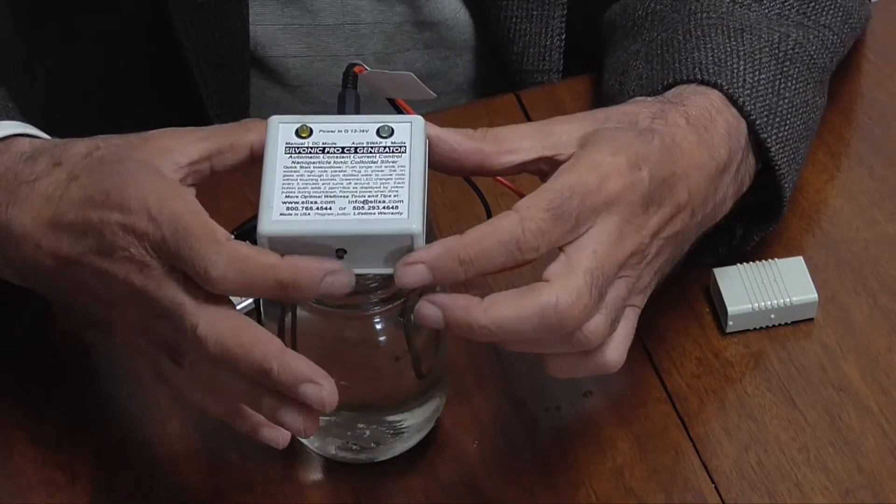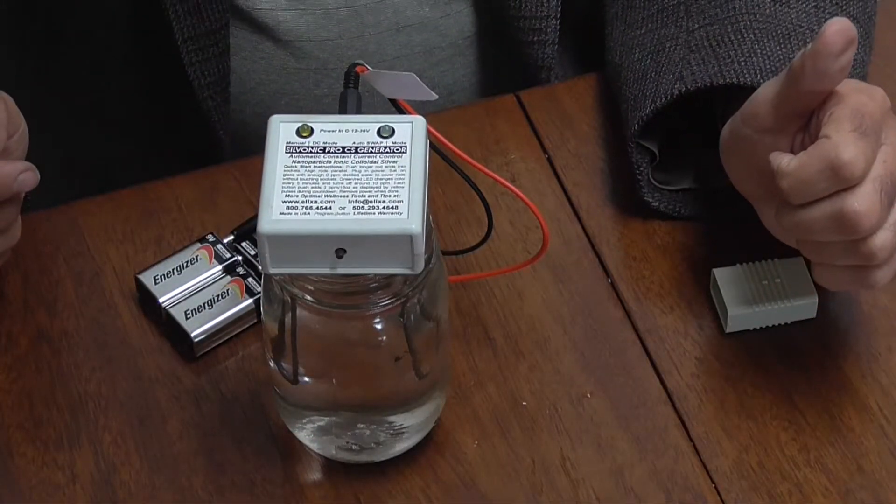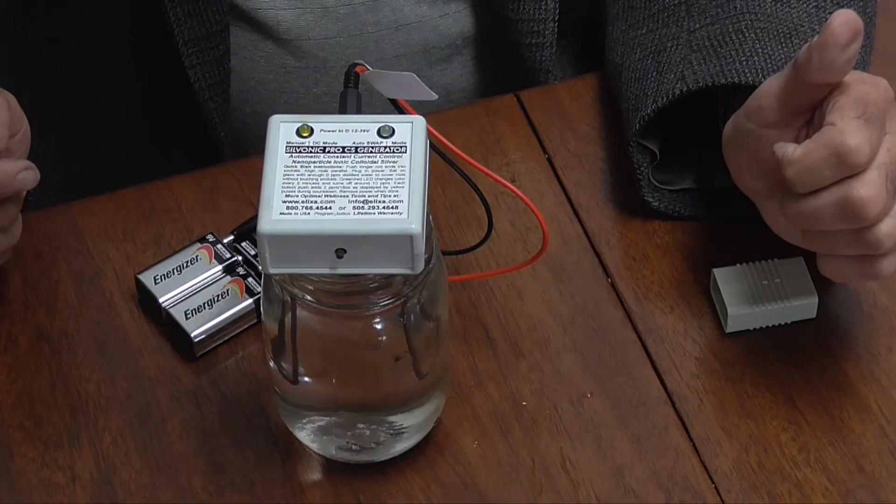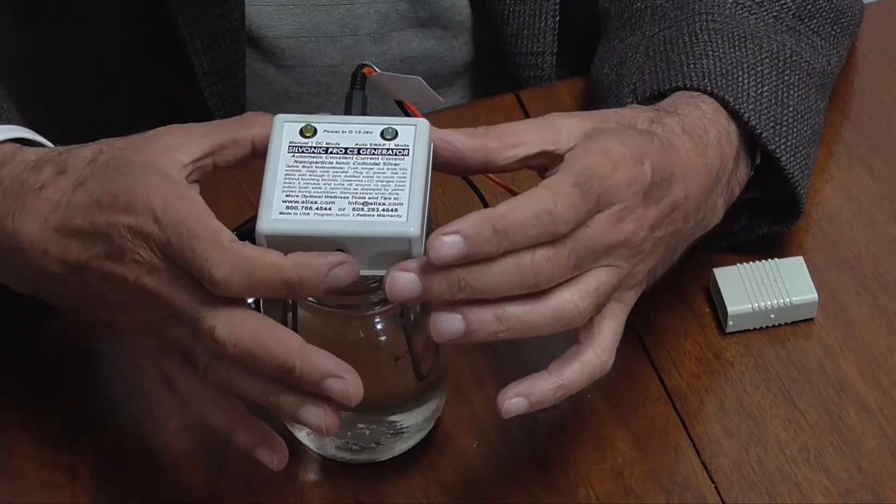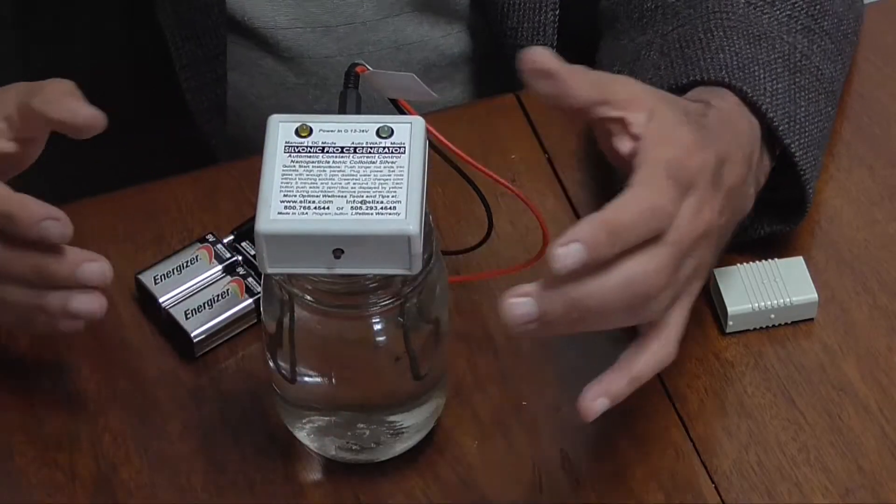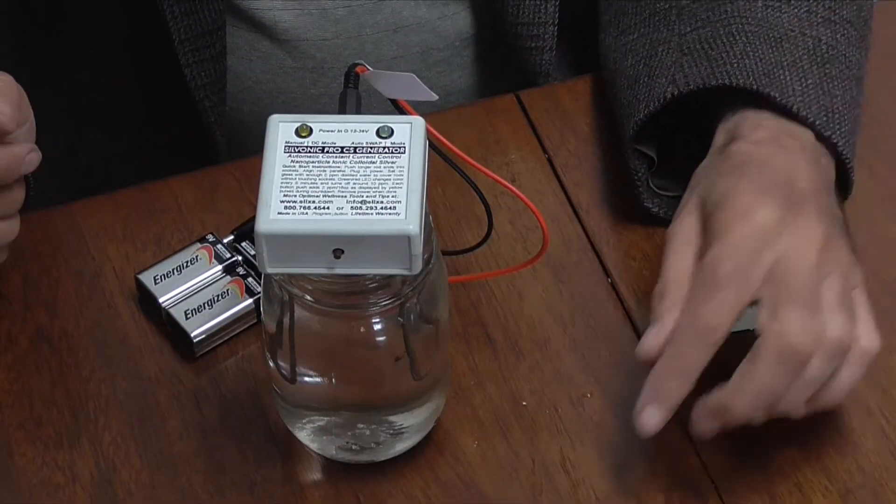If I press the button again, now it shows me that I've got two button pushes pressed in, so now it flashes twice for two. I can press it again, and it'll count down three times.